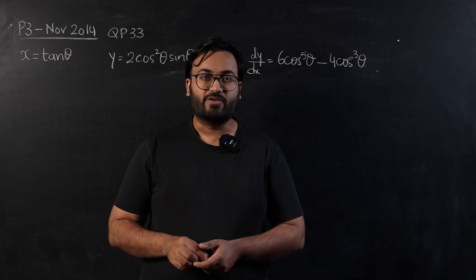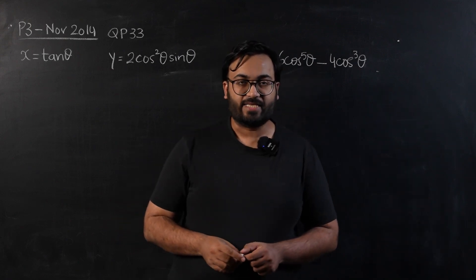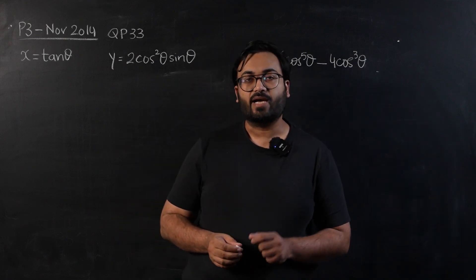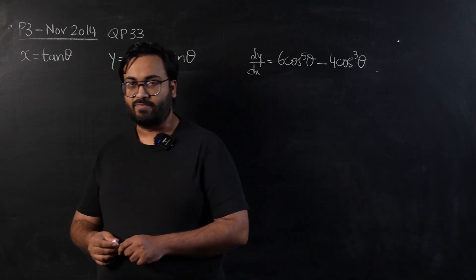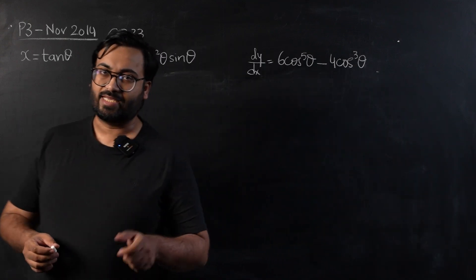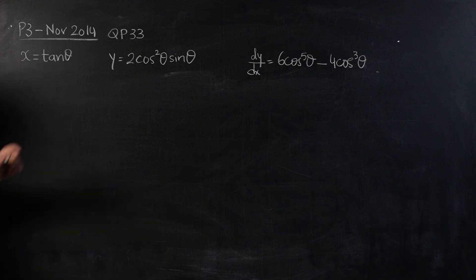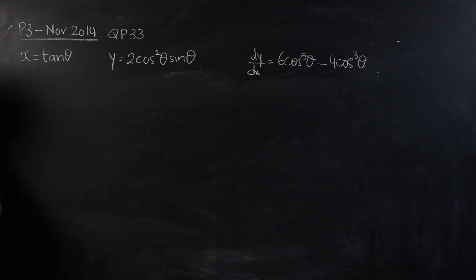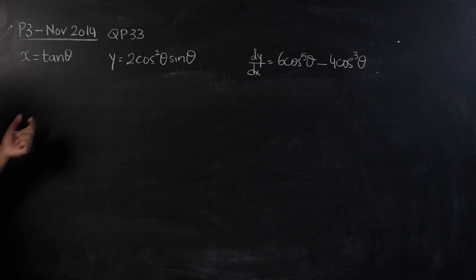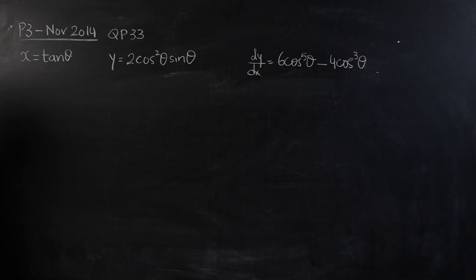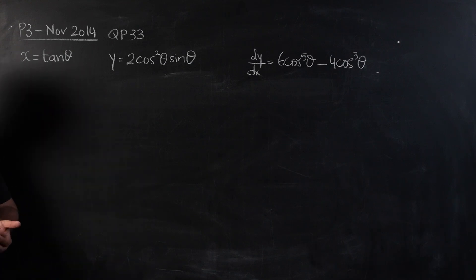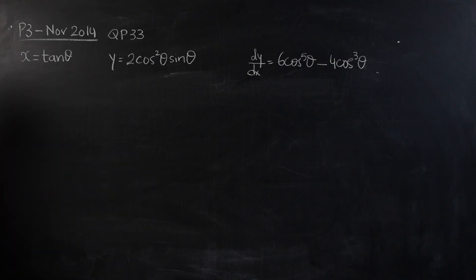Hello guys, welcome to your daily dose of mathematics. Today, we are doing a Paper 3 A-levels question. This is a parametric differentiation question. This appeared in Paper 3, 2014, variant 3. And this was a tricky question because it involves some trigonometric manipulation. So, let us start with that.